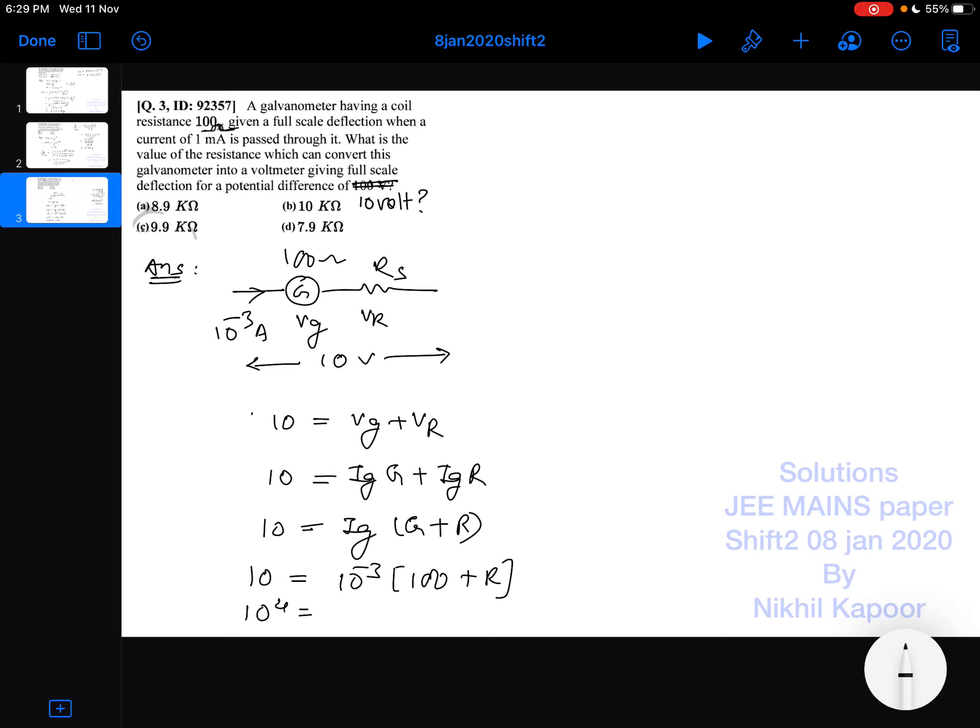So this becomes 10 raised to 4 equals 100 plus R. So R comes out to be 10 to the power 4 minus 100. So 10 to the power 4, that is 10,000 minus 100.